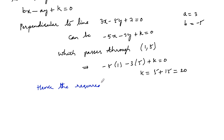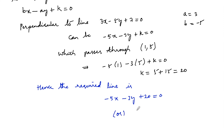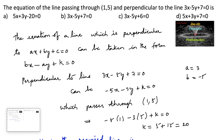Hence the required line is: -5x - 3y + 20 = 0, or equivalently 5x + 3y - 20 = 0. Therefore, option A is the answer.